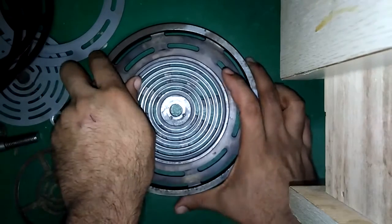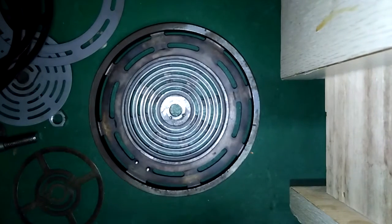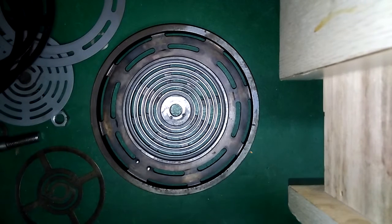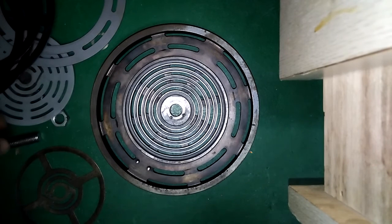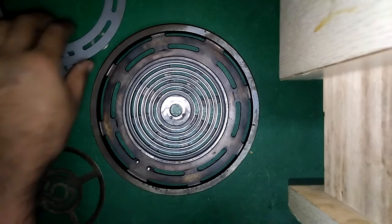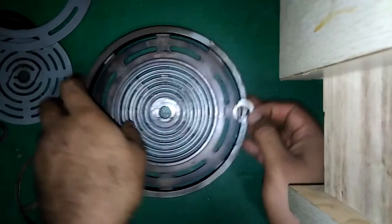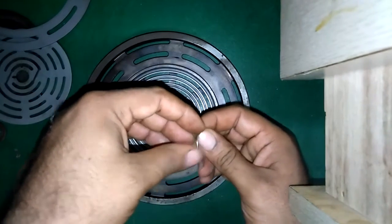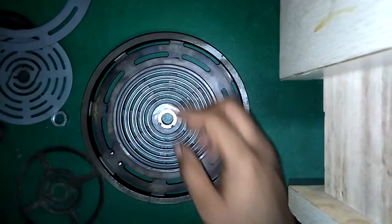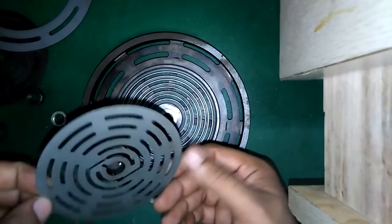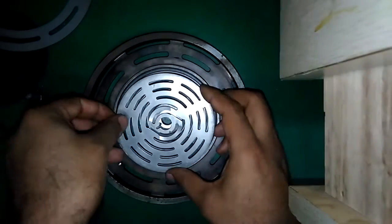Now I'm going to assemble it in the reverse order. First place the 0.6mm washer, second place then the valve plate.